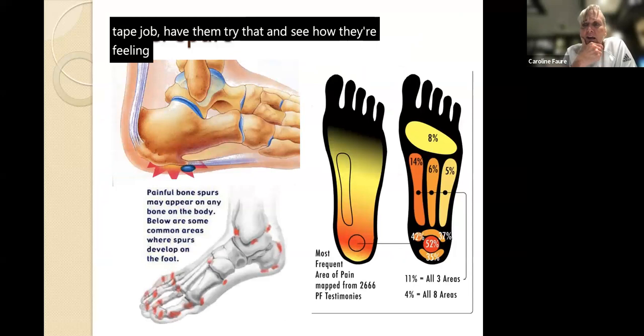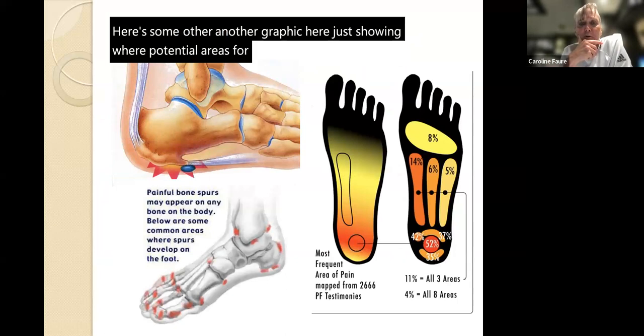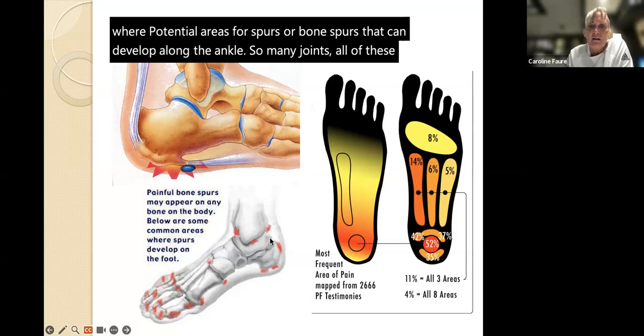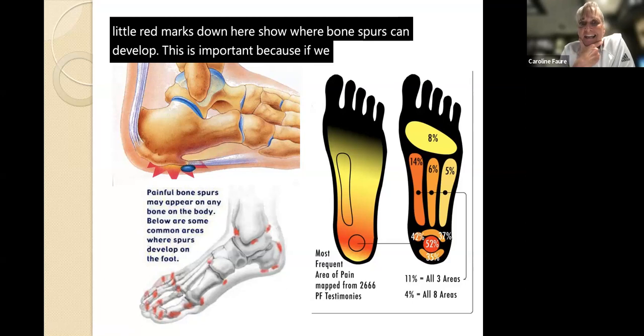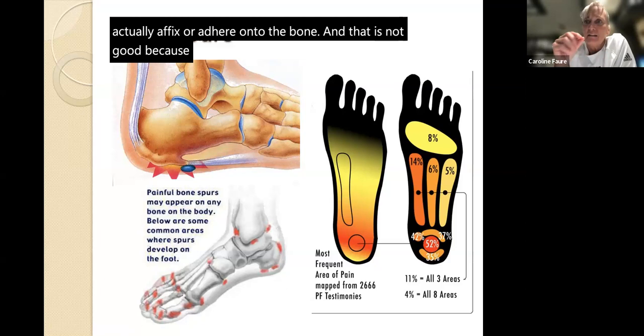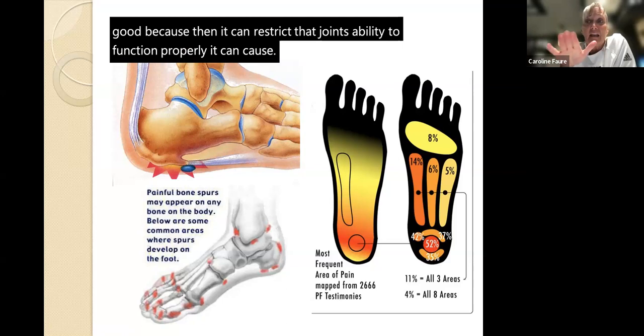This graphic shows potential areas for bone spurs that can develop along the ankle. Many joints have areas where bone spurs can develop. This is important because if we allow swelling to stay in the joint, that swelling can harden and adhere onto the bone - restricting the joint's ability to function properly, causing pain, and restricting mobility. So again, another advertisement for the importance of icing and not letting swelling accumulate in the joint.